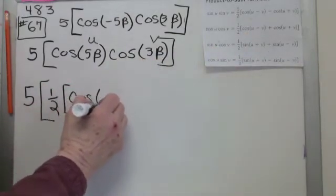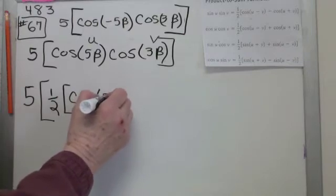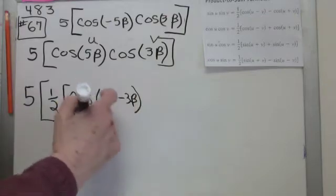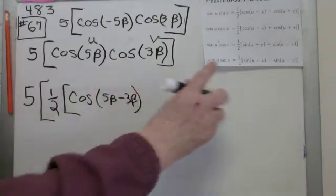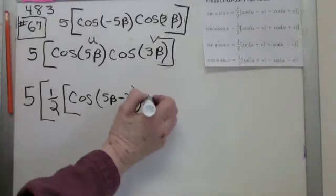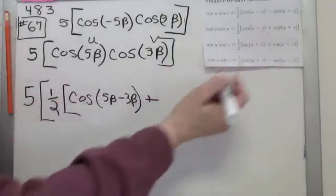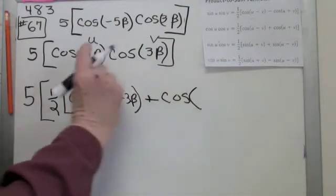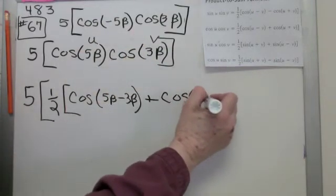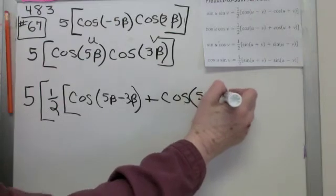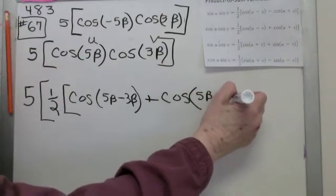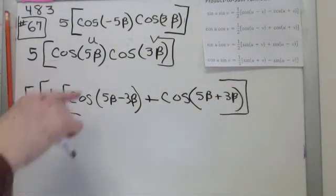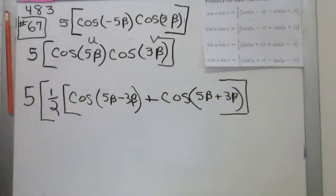Cosine u minus v. So that means 5 beta minus 3 beta. I like to write this step in, even though you can do that subtraction in your head. Following the formula, now I have a plus sign. And then it's cosine again. And this time, it's u plus v. So it's 5 beta plus 3 beta. Alright, so now we've used the formula to rewrite using the u's and v's as substitutions.